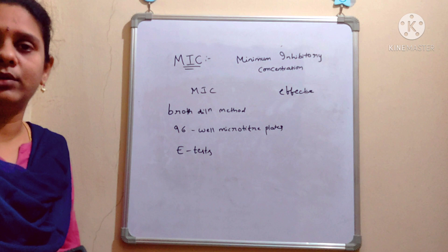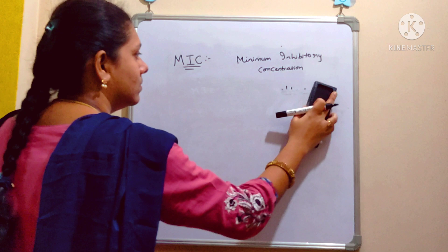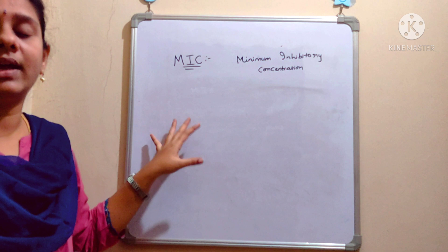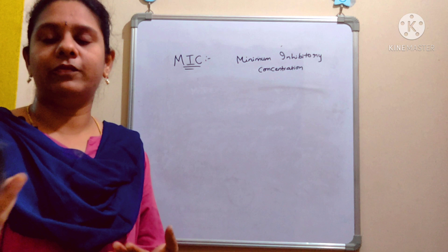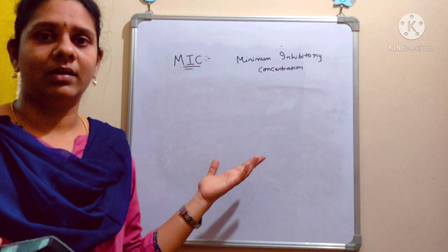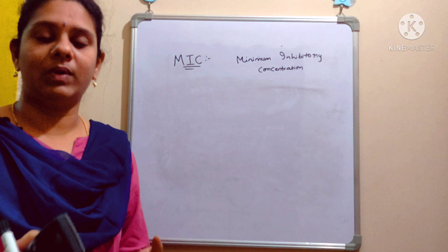In the broth dilution method, how can you detect the MIC value? We are going to serially dilute the antibiotic solution. You may take any drug of your choice. If you discover a novel compound and want to check whether it has antimicrobial properties, you can use MIC because MIC is the first step for preclinical study.